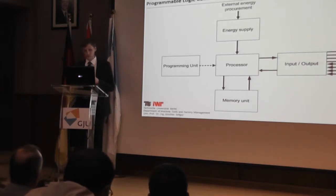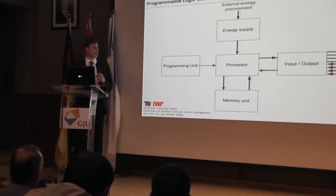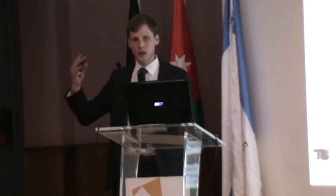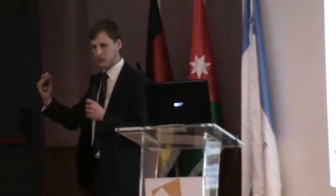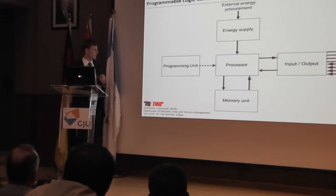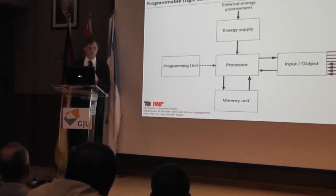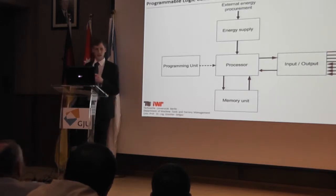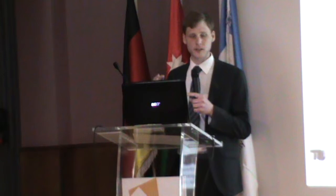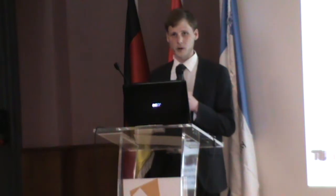A PLC from the hardware side has inputs and outputs. Outputs mean I give a signal to an actuator, which reacts in the corresponding way. Inputs come from a sensor, which delivers a signal that is then processed. A PLC needs energy, has a memory unit, and a programming unit. Due to historical development, there are different kinds of PLCs — at the beginning they were hardwired, but meanwhile we can talk about soft PLCs, where the control and processing is done directly by industrial computers.